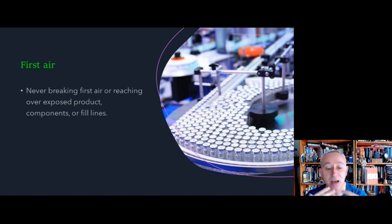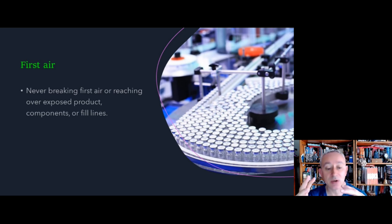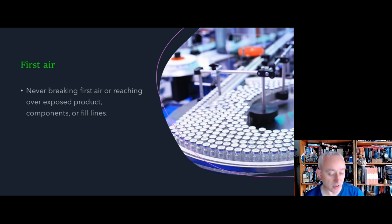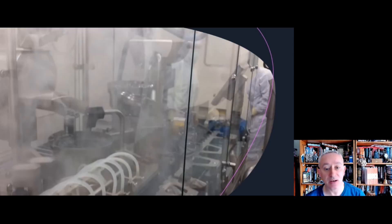It's important to understand that many things can disrupt first air. We need to avoid the airflow from becoming blocked, or from things that might generate particulates due to their design, or anything that would create undue turbulence. An intervention is one thing that can disrupt first air, and we can demonstrate first air through things like smoke studies, as shown on the screen.